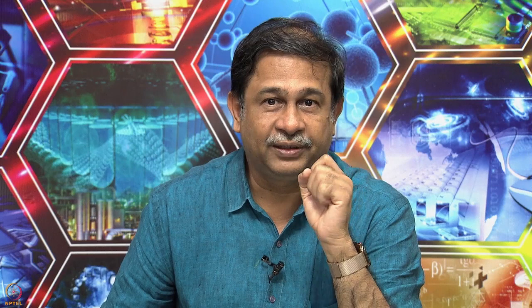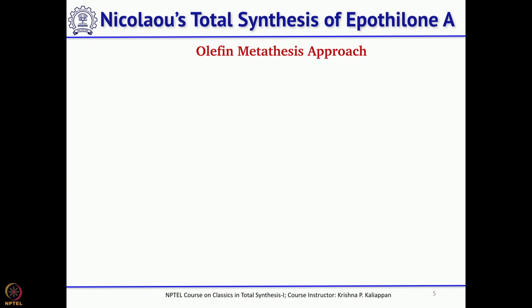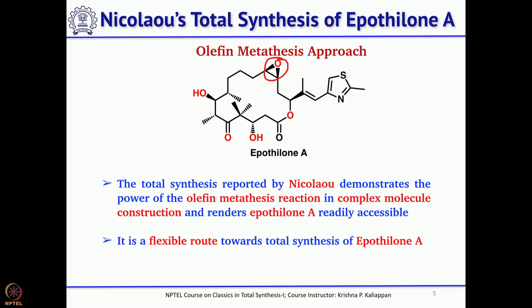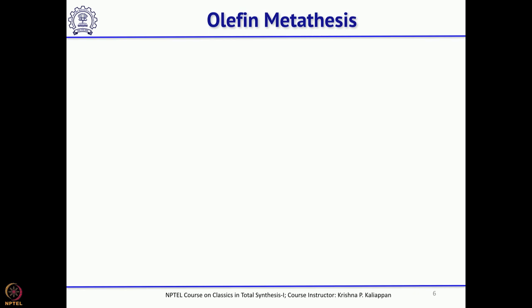Now let us see two total syntheses today, both reported by Nicolaou. What Nicolaou thought was: if you look at the epoxide in Epothilone, that epoxide can be made from a double bond, and that double bond can be made through ring-closing metathesis. So directly, this molecule can be opened to a linear chain through retrosynthetic analysis using metathesis.